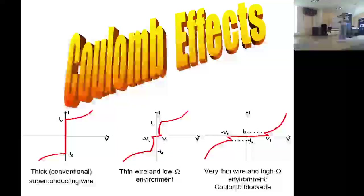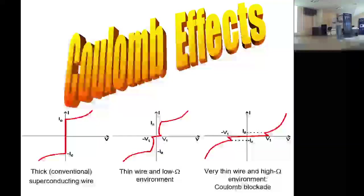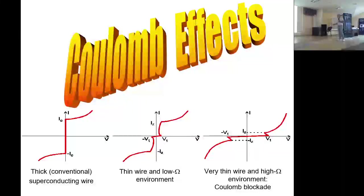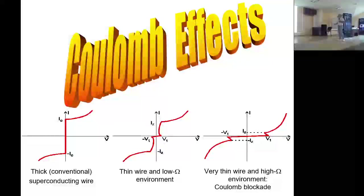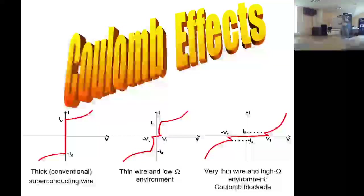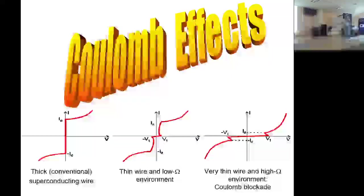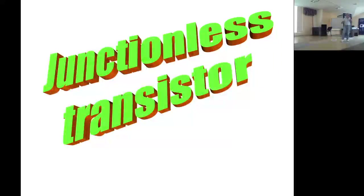Следующее приложение — кулоновские эффекты, или транзистор, не использующий электрический барьер. Для обычного сверхпроводника течёт сверхток без падения напряжения. В режиме сильных квантовых флуктуаций возникает парадоксальная ситуация: сверхпроводник переходит в диэлектрическое состояние — мы прикладываем напряжение, а ток не течёт. Это кулоновская блокада. Гамильтонианы одноэлектронного транзистора и транзистора без туннельных контактов, но с двумя тоненькими проводами, абсолютно идентичны с точностью до замены переменных.